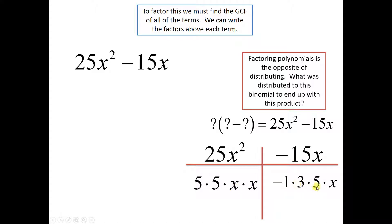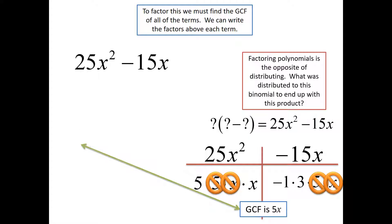Now, 15x is 3 times 5 times x, and I went ahead and put negative 1 here because it's a negative 15. So the greatest common factor is going to be 5x. That's the biggest thing they both share. So 5x, I'm going to go ahead and take that out, and that's what I'm going to factor out. That's what goes on the outside.